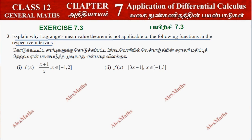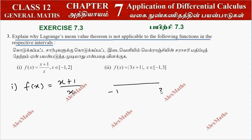First subdivision: the function has denominator x. If the denominator is 0, the function does not exist. The interval is minus 1 to 2. Zero is one of the values in this interval. If 0 is substituted, 0 plus 1 by 0 is equal to infinity.